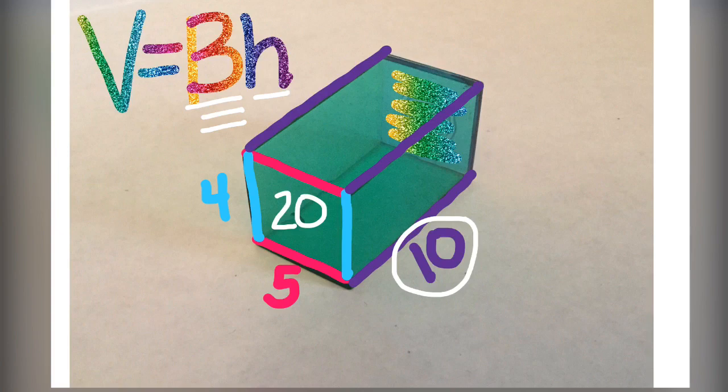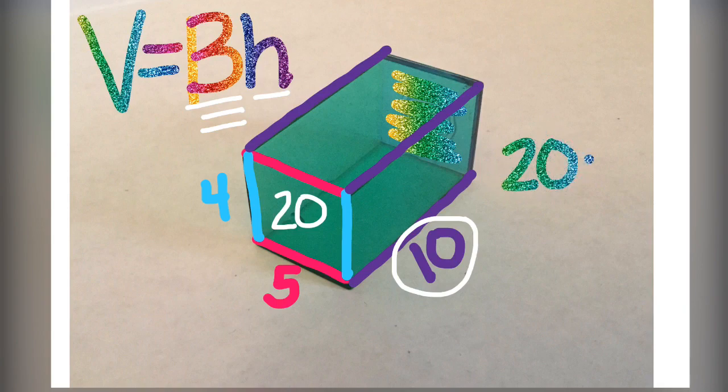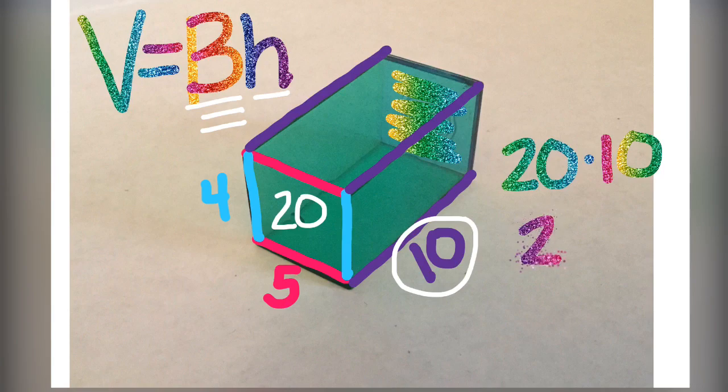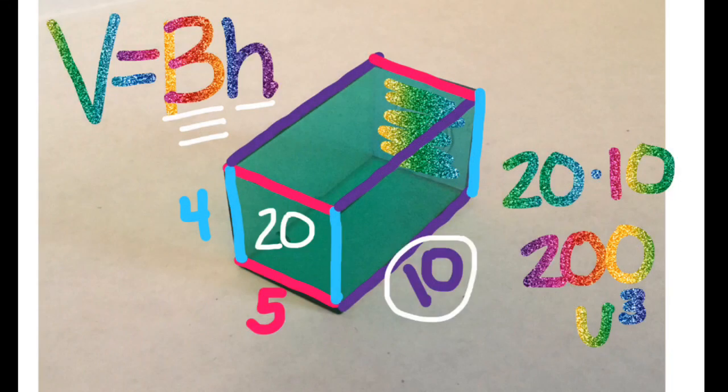Rectangular prism should be a review. So, now, we're going to go ahead and just multiply what we found. Volume equals 20 times 10. So, the volume of this rectangular prism is 200 units cubed. Remember, three-dimensional shapes, volume is capacity, so it's cubed.